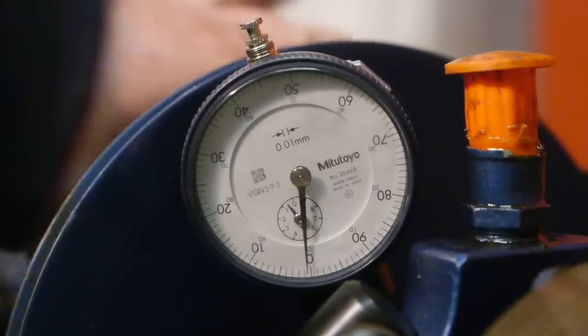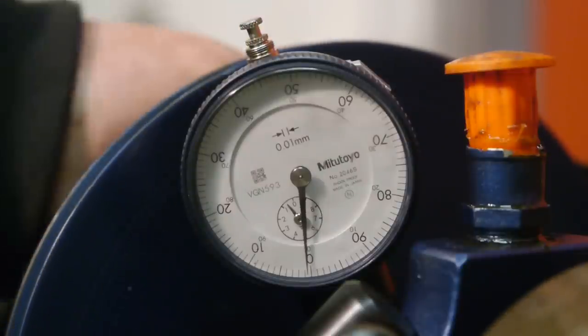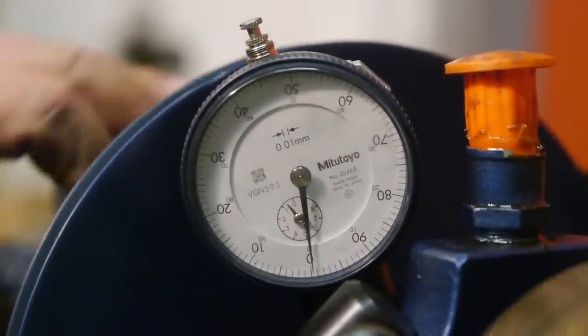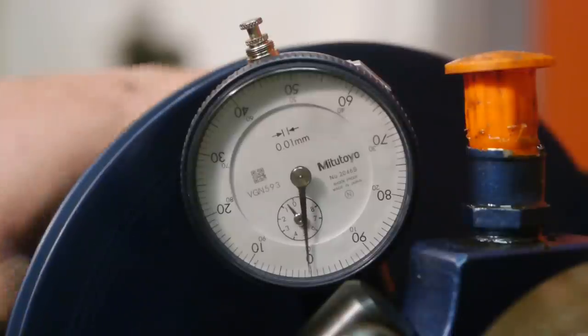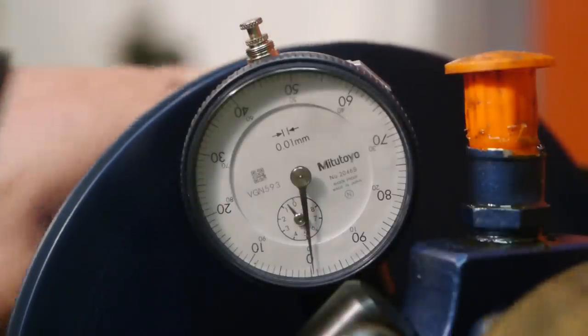What is a lathe test without a little dial gauge action? Not too bad—about two hundredths of a millimeter runout. I couldn't measure against the spindle nose, there was no good surface.